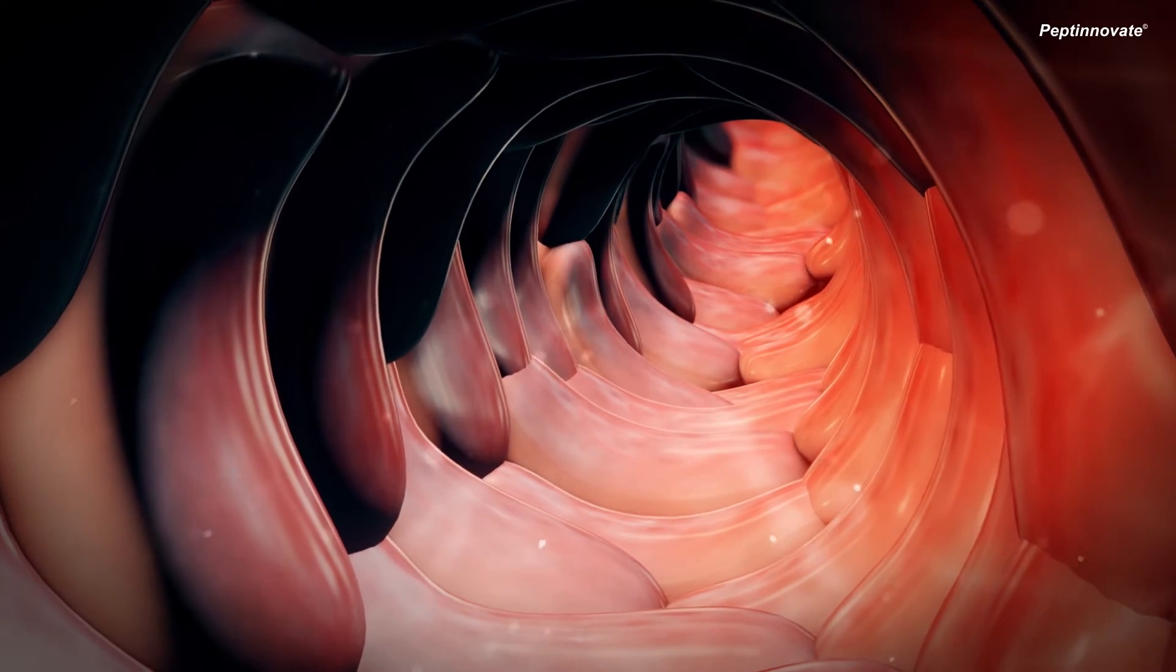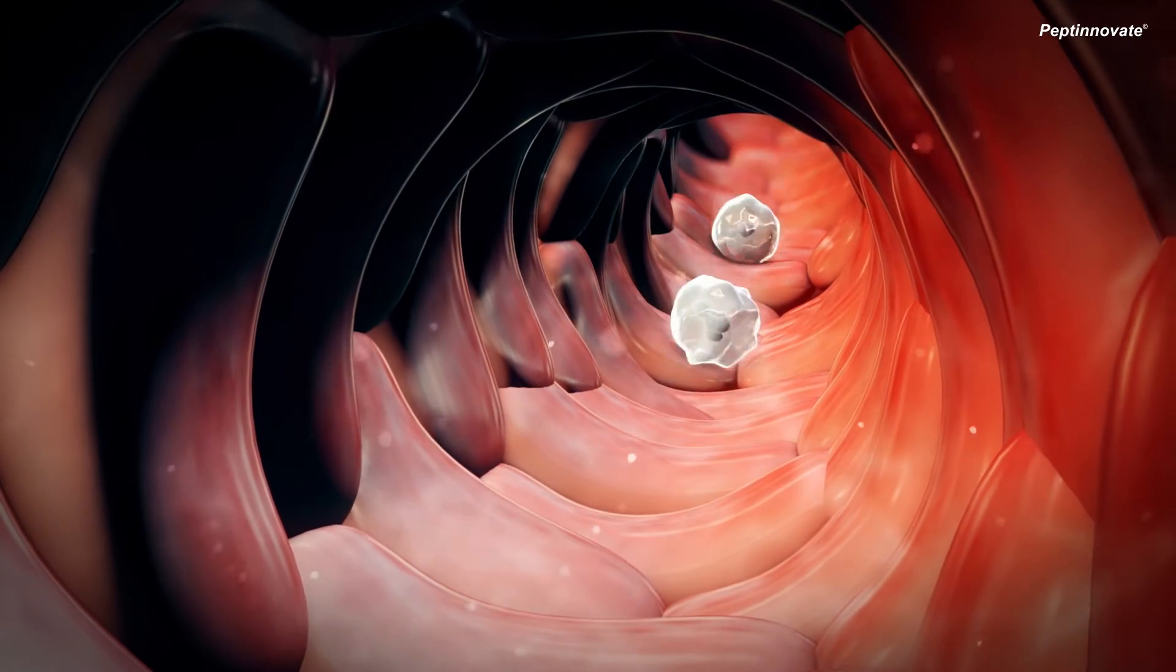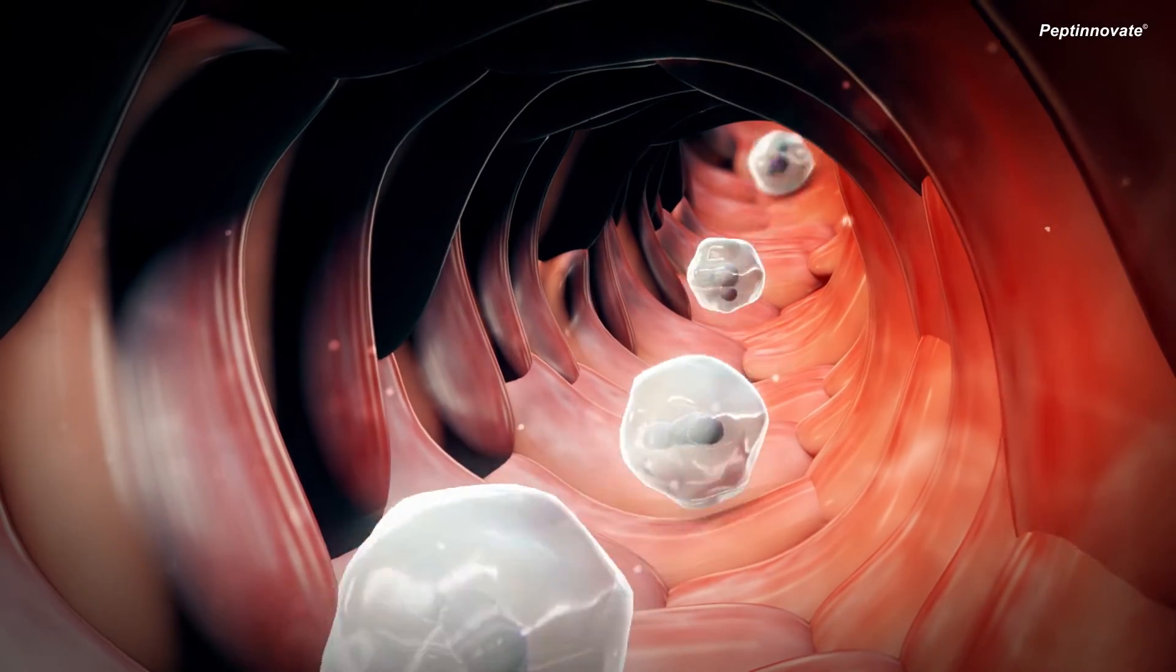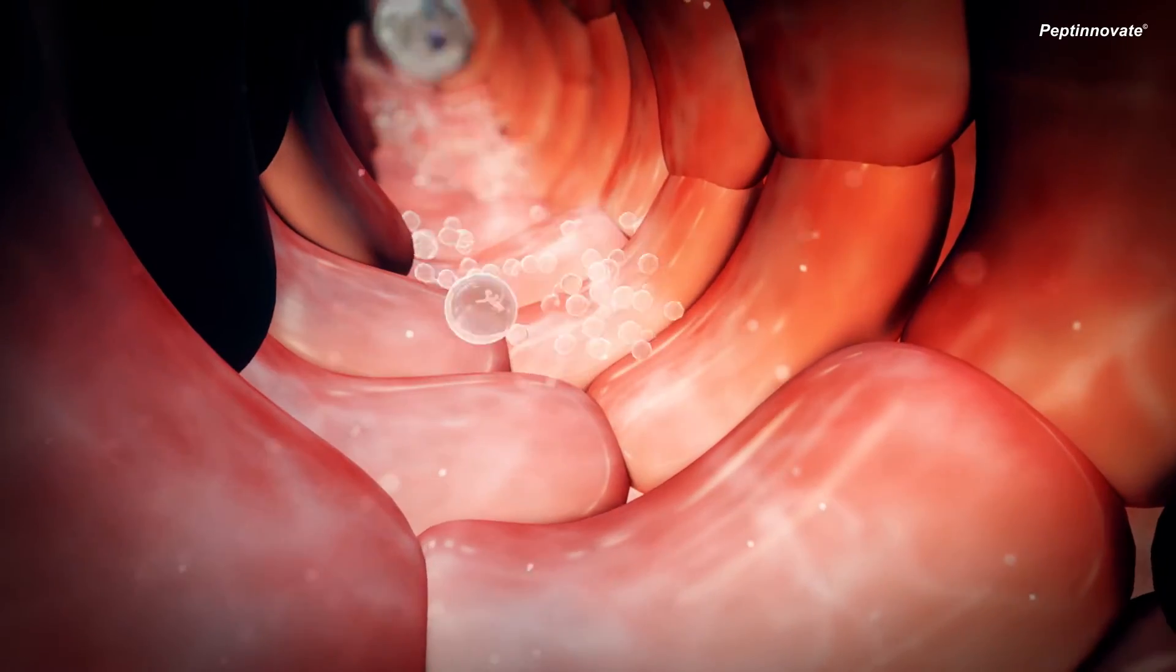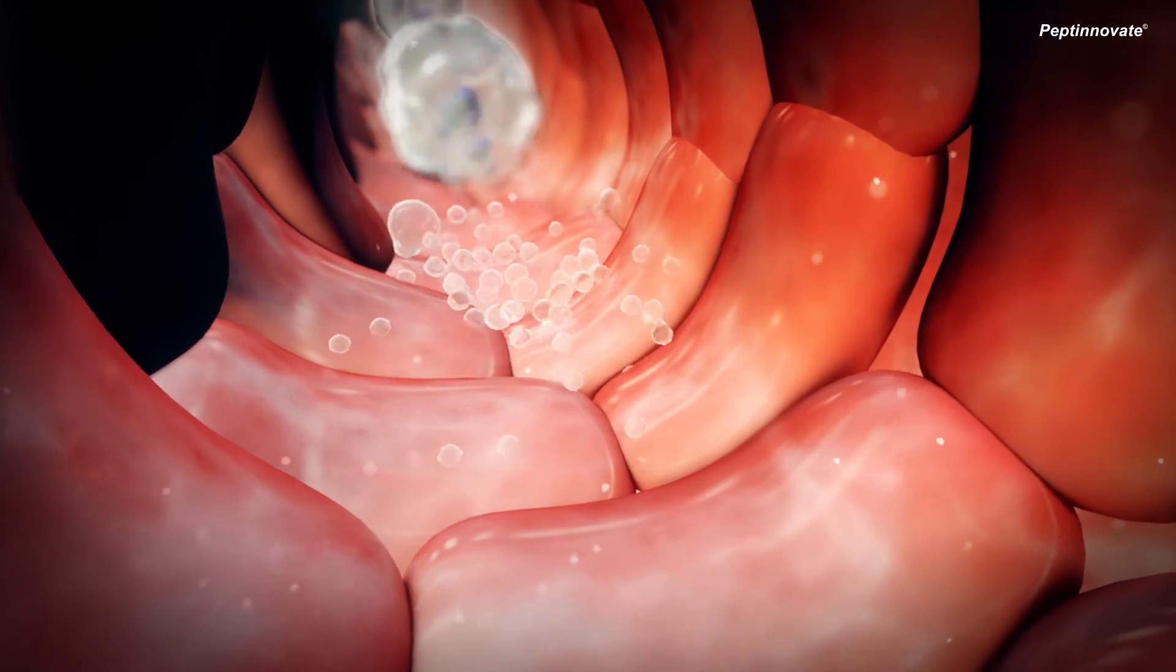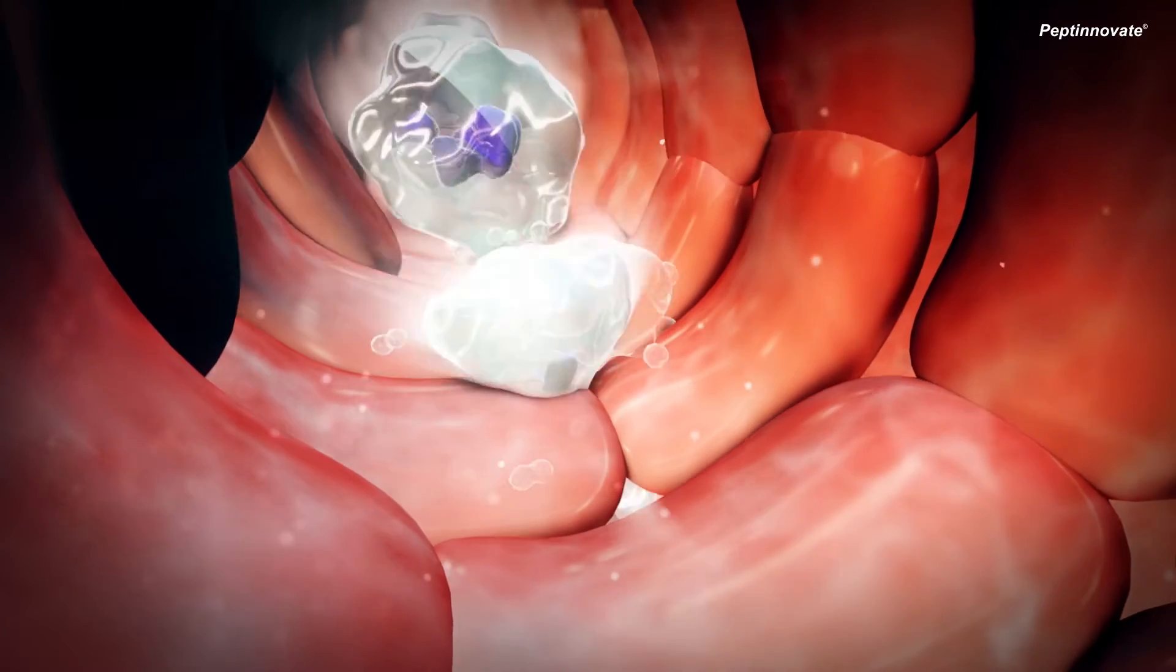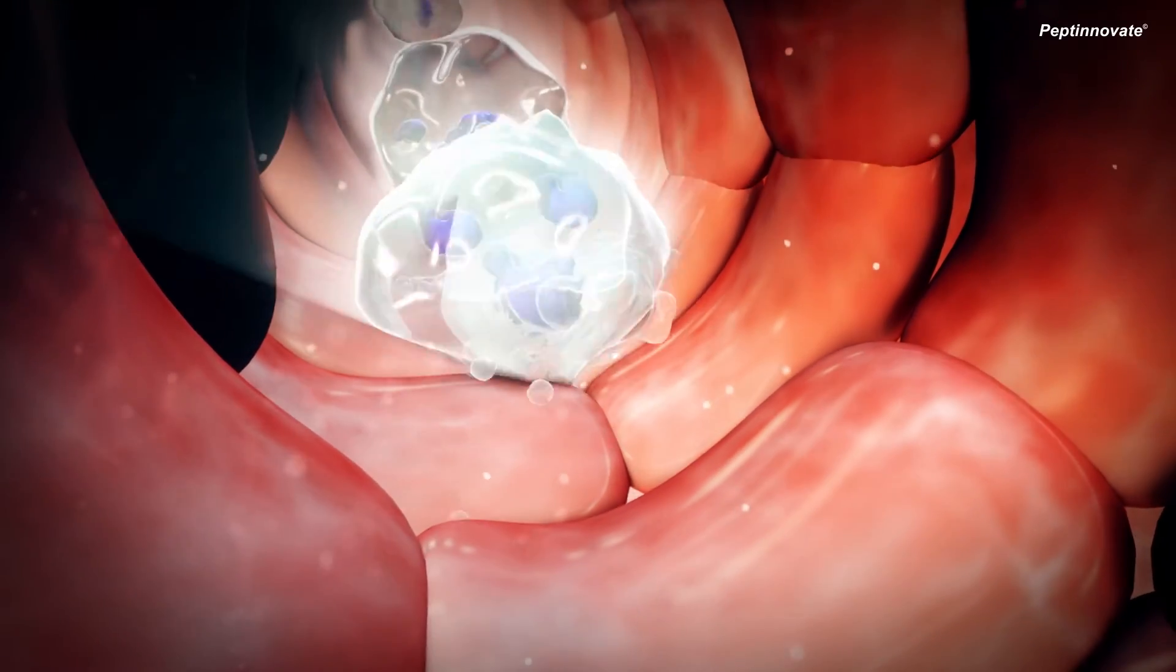Ordinarily, a bacterial infection causes a cascade reaction, attracting a large number of white blood cells from the bloodstream, via a process of diapodesis or extravasation, where the blood cells squeeze through the blood vessel walls and into the infected tissue.